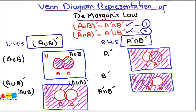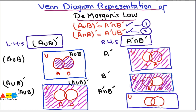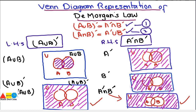Now for A complement intersection B complement: with sets A, B, and universal set drawn, A complement intersection B complement is the common portion of A complement and B complement. The common portion is everything in the universal set outside both A and B. This shaded region is A complement intersection B complement. It is clear that this Venn diagram matches A union B whole complement, thus proving Form 1 of De Morgan's law.